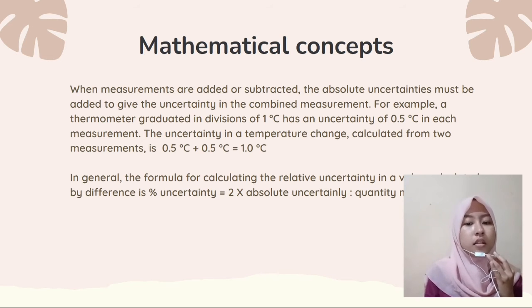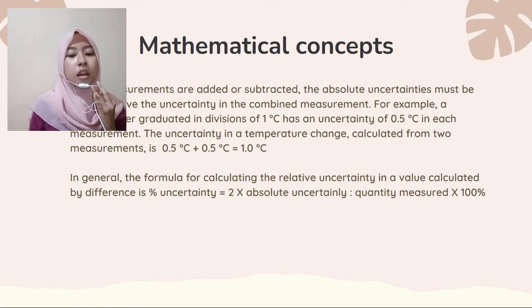In general, the formula for calculating the relative uncertainty in a value calculated by difference is: % uncertainty = (2 × absolute uncertainty / quantity measured) × 100%.